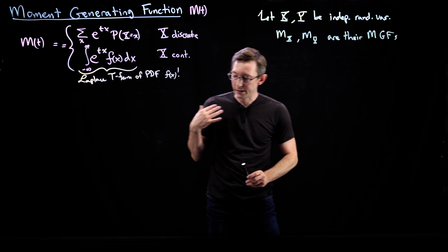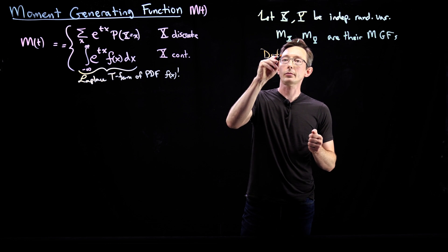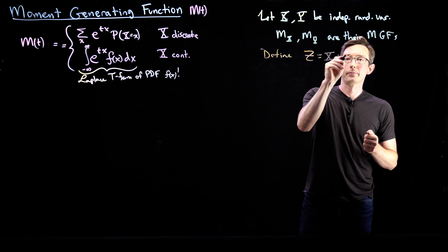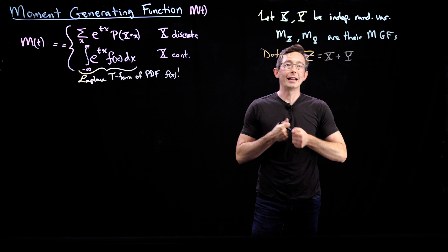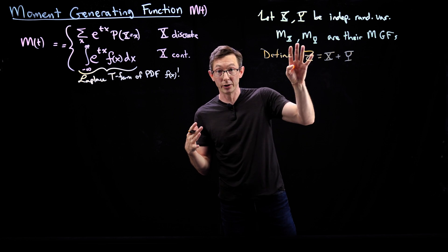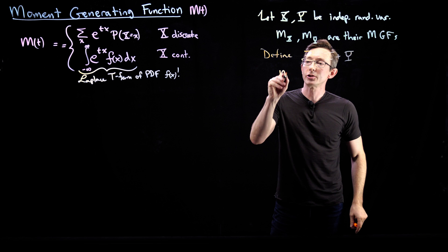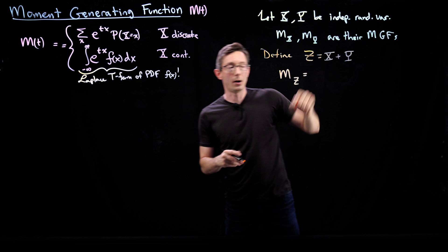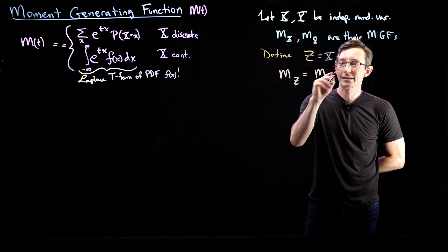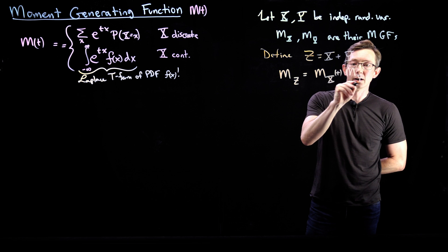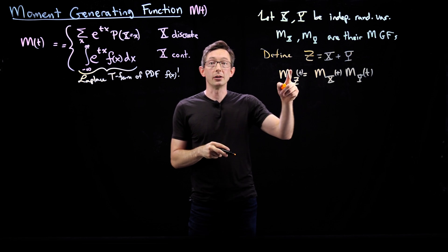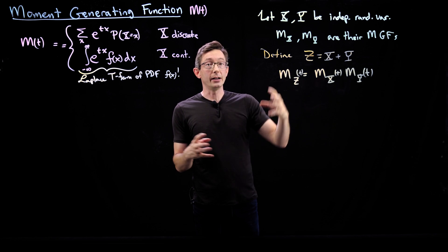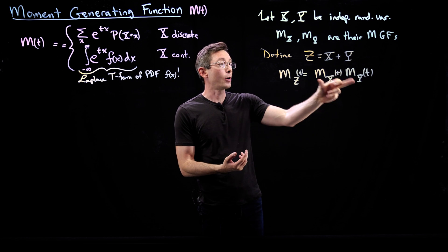We are going to define a new variable Z = X + Y. The property is that the moment generating function of Z is equal to the product of the moment generating functions of X and Y. So M_z(t) = M_x(t) × M_y(t). If I have two random variables and I add them up, the moment generating function of their sum is the product of their moment generating functions.